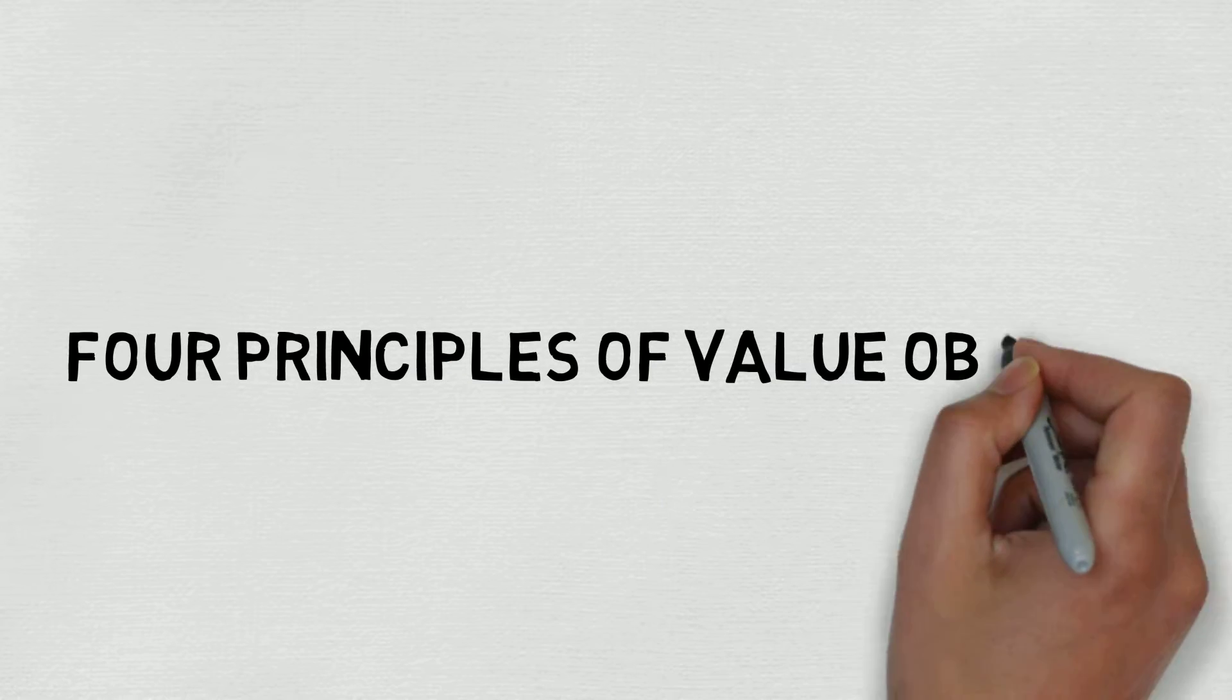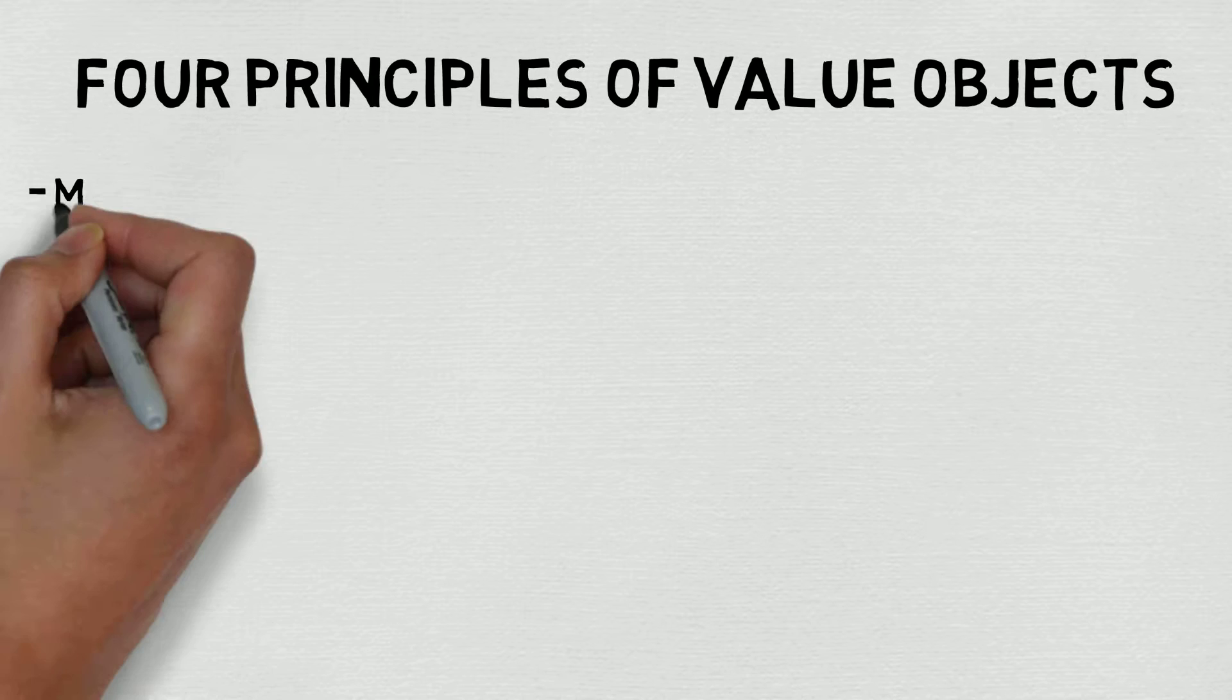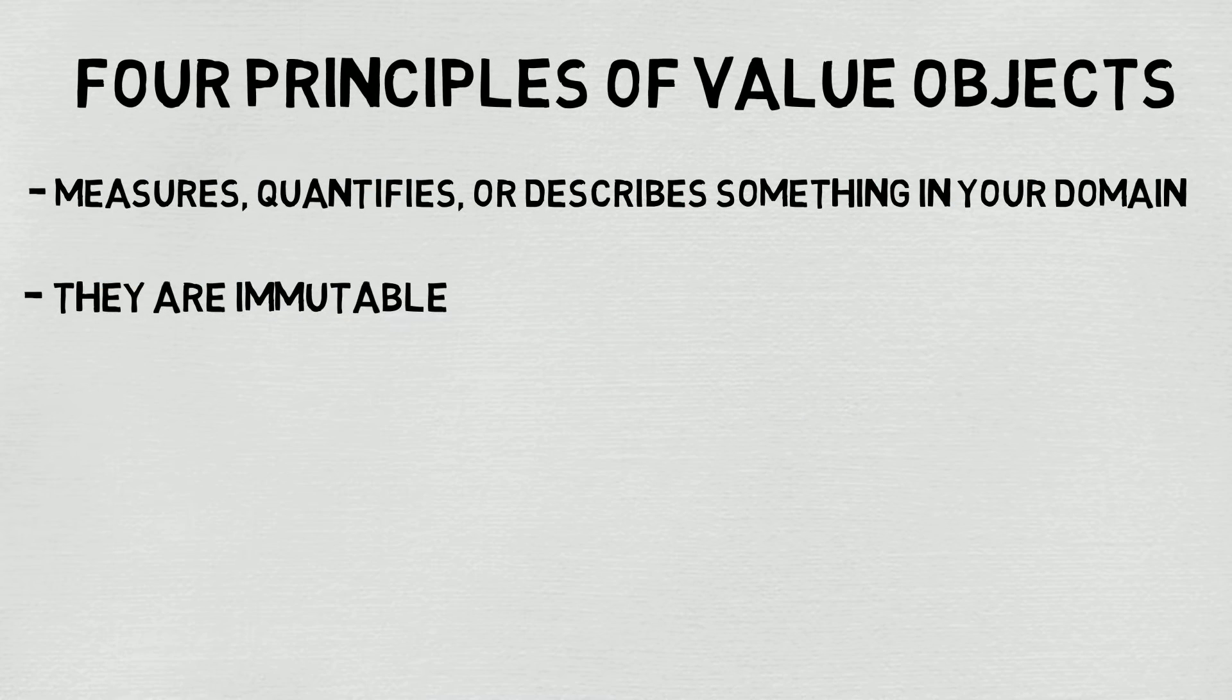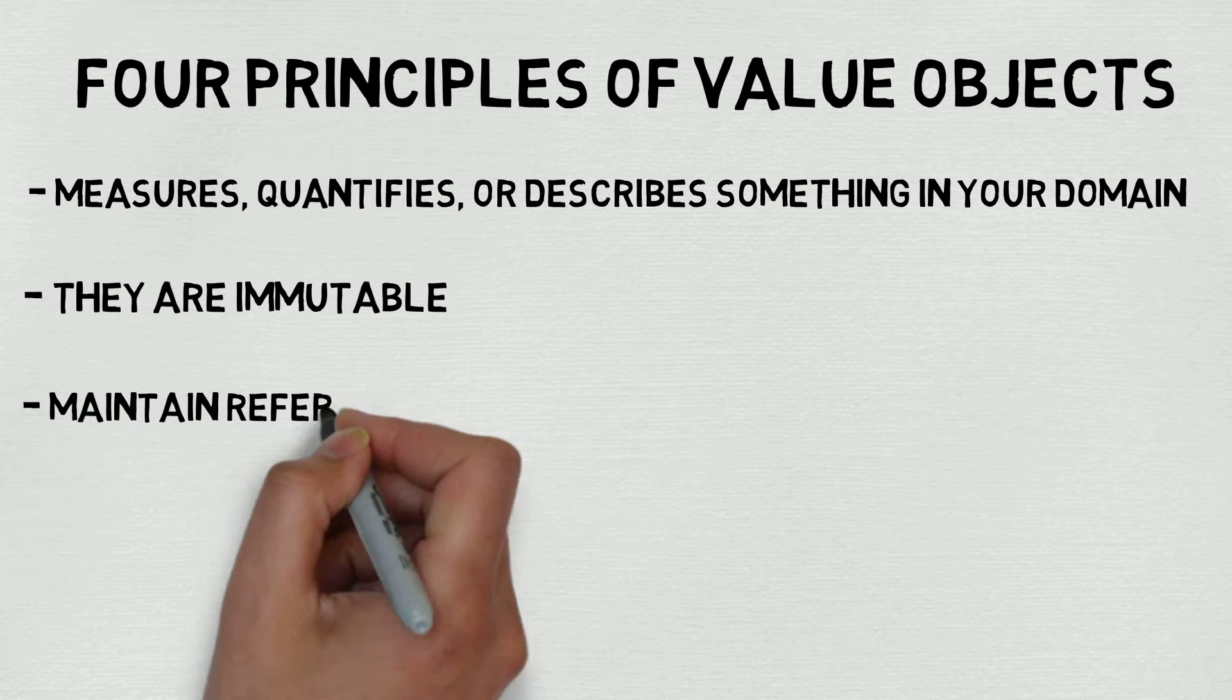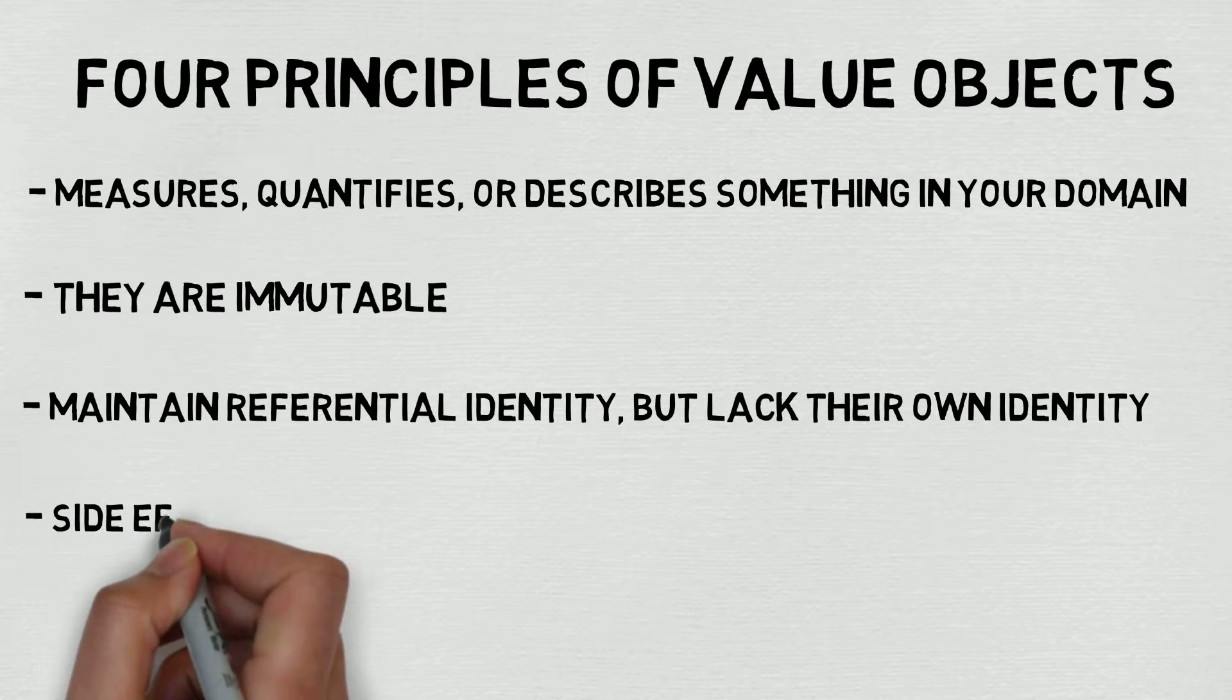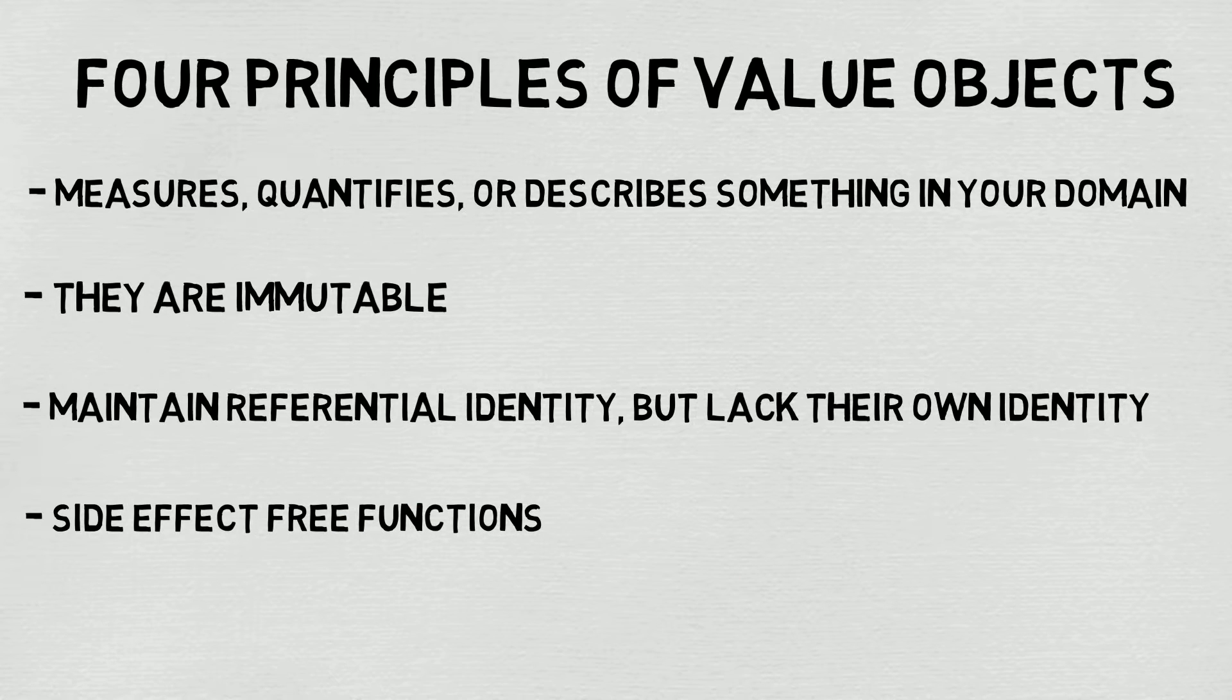To help further understand what value objects are, we can break the concept down into four principles. They measure, quantify, or describe something in your domain. They are immutable. They maintain referential identity but lack their own identity. And they provide side-effect-free functions.